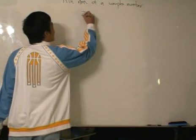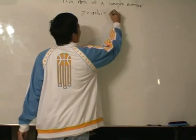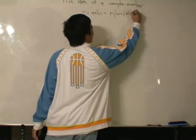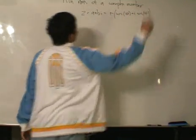We are given a complex number z equals a plus bi, or r times cosine theta plus i sine theta. So this is a complex number.